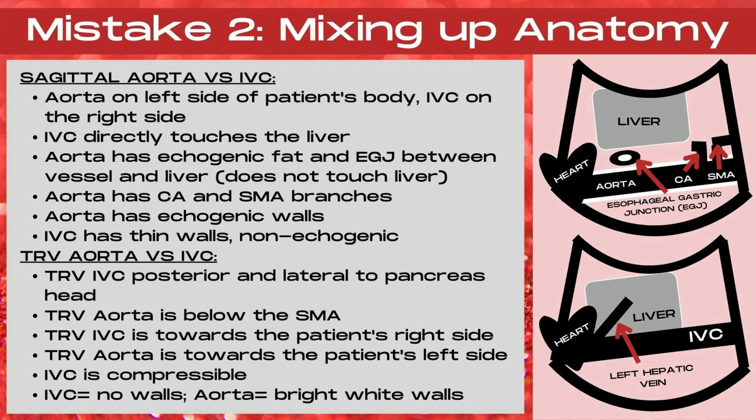Also note that the IVC is going to directly touch the left lobe of the liver. So when you're imaging, your left lobe of your liver is going to be on the top portion of the image, and then directly underneath that touching the liver is going to be your IVC. While the aorta is going to have echogenic fat and also the EGJ — that's your esophageal gastric junction — between the aorta itself and the liver. So the aorta is not going to directly touch the liver, and it's going to lie deeper on that ultrasound image than the IVC does.